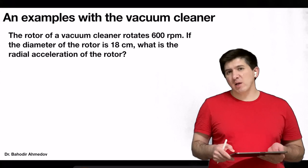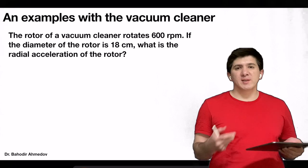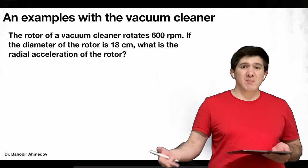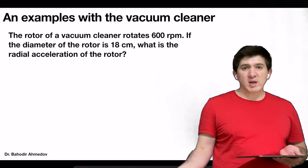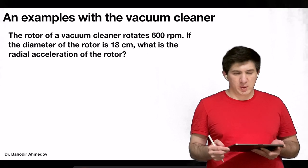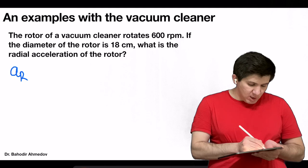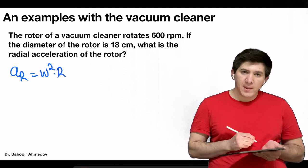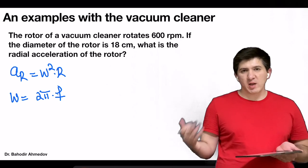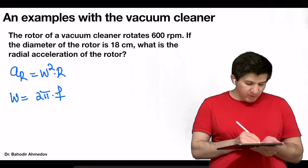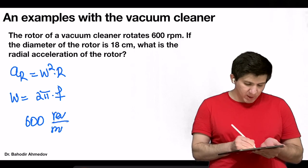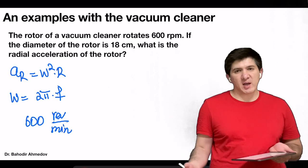Let's calculate the radial acceleration to understand how it compares with gravitational acceleration. Say I've got a vacuum cleaner whose rotor rotates 600 times per minute, and the radius of the rotor is 9 cm (diameter 18 cm). The radial acceleration equals ω² times r, and omega equals 2π times the frequency. Since the frequency is the number of rotations per second, we divide 600 revolutions per minute by 60 to get 10 hertz.